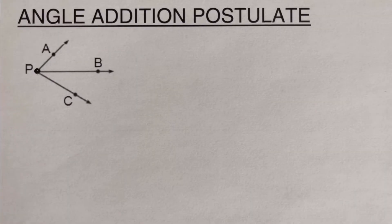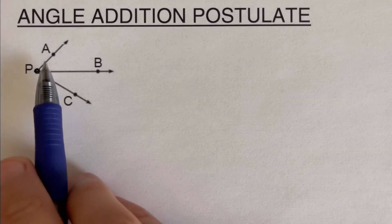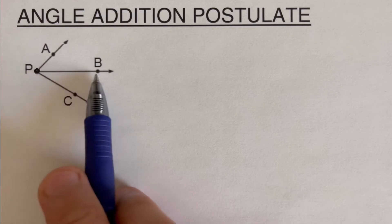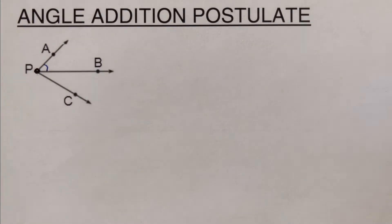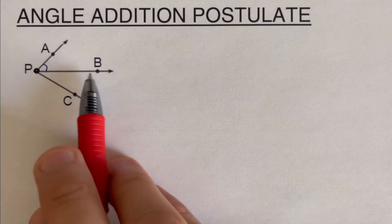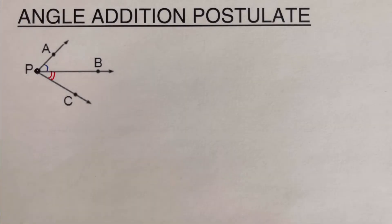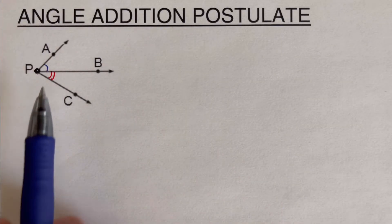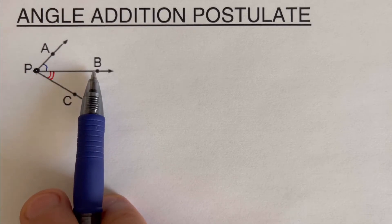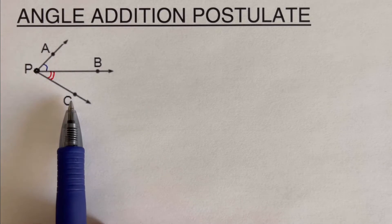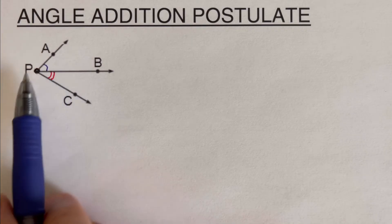We can see that in this figure we have angle APB — I will label that with a blue tick — and the second angle is BPC, which I will label with red ticks. The angle addition postulate states that if we add the blue angle APB plus the red angle BPC, that is equal to the whole angle APC.